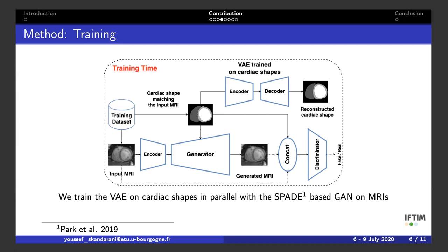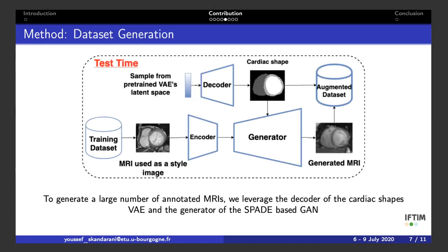At test time, we sample from the previously learned latent space of the variational autoencoder a large number of anatomically plausible segmentation maps. We then take these segmentation maps and feed them to the trained generator, which in turn outputs an MRI matching the input per texture. In doing so, we manage to accumulate a large number of MR images and their corresponding ground truth labels.